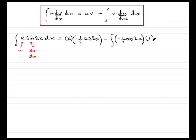So that you can see, or the examiner can see, what you've done. And don't forget the dx on the end. Next, all I need to do is clean this up. So if I clean this up now, I've got minus a half x cos 2x.